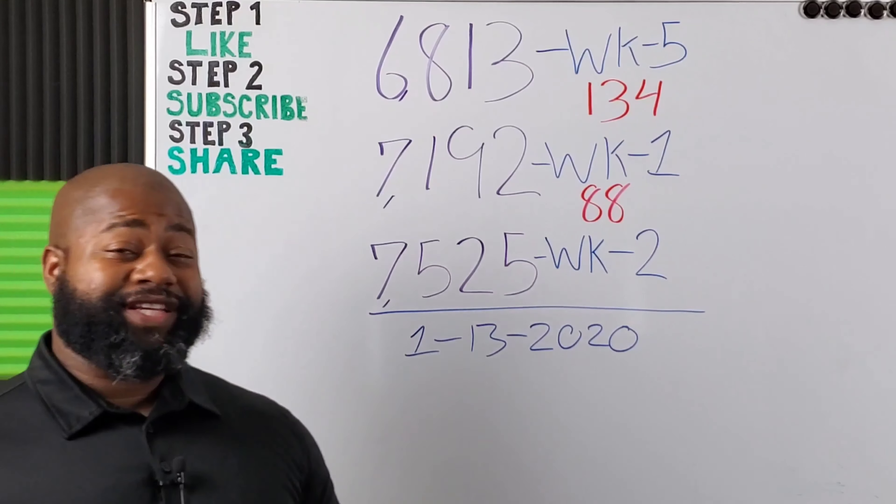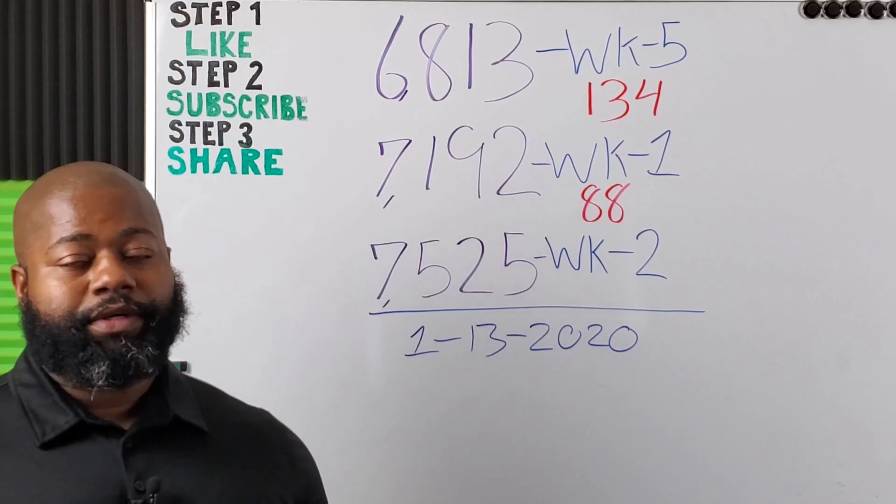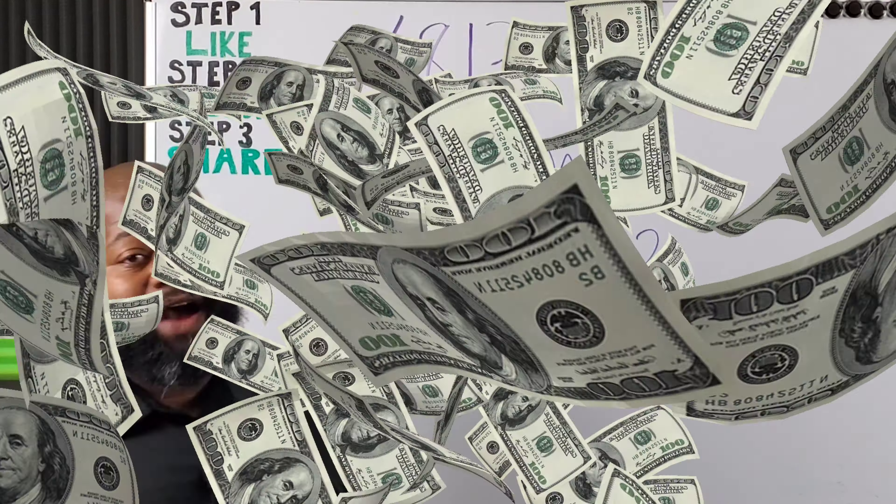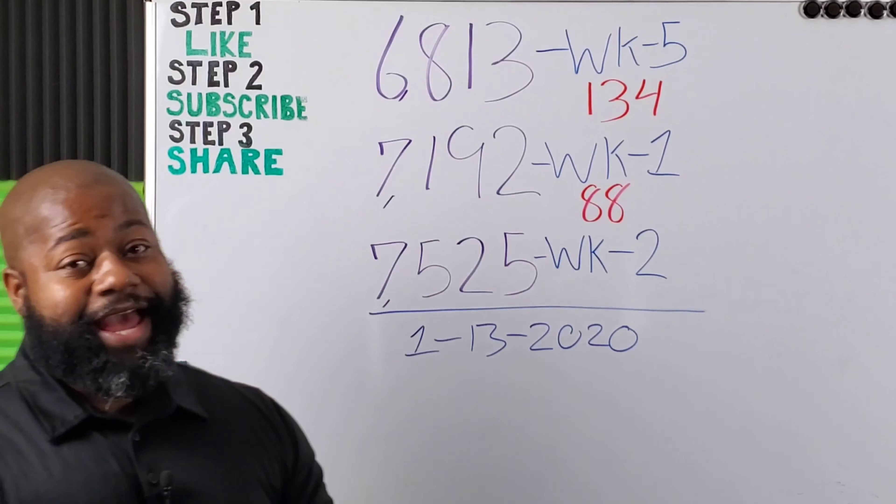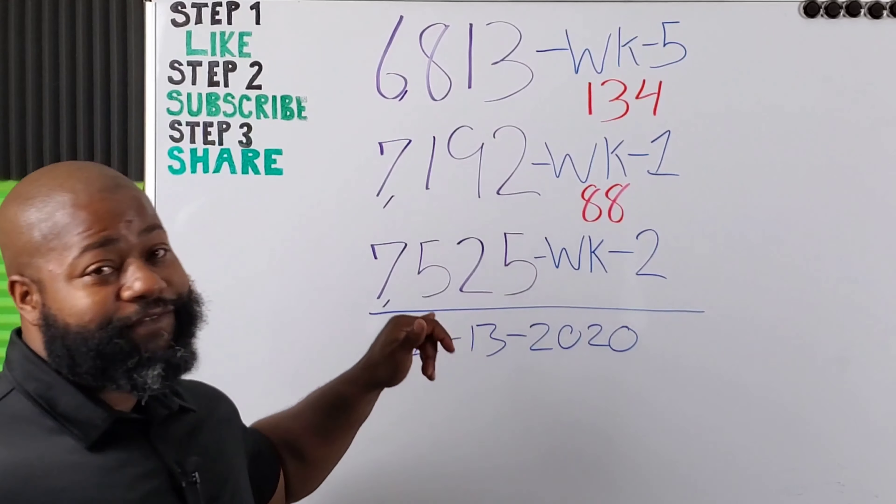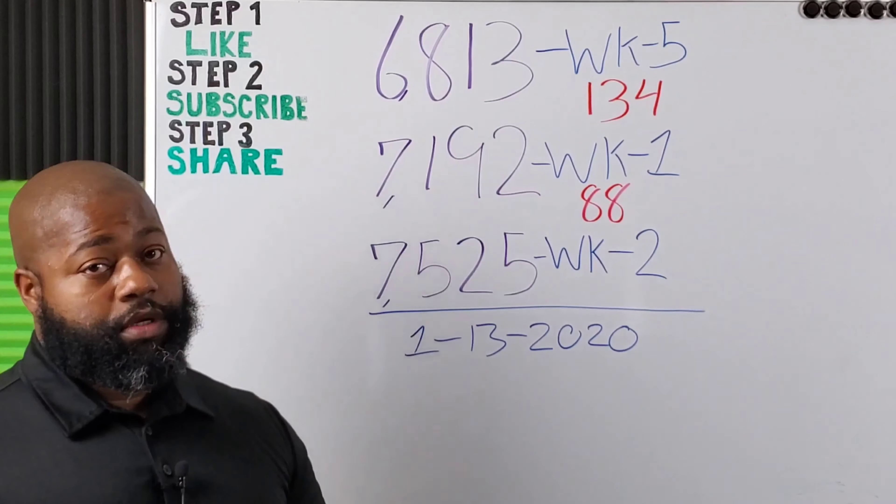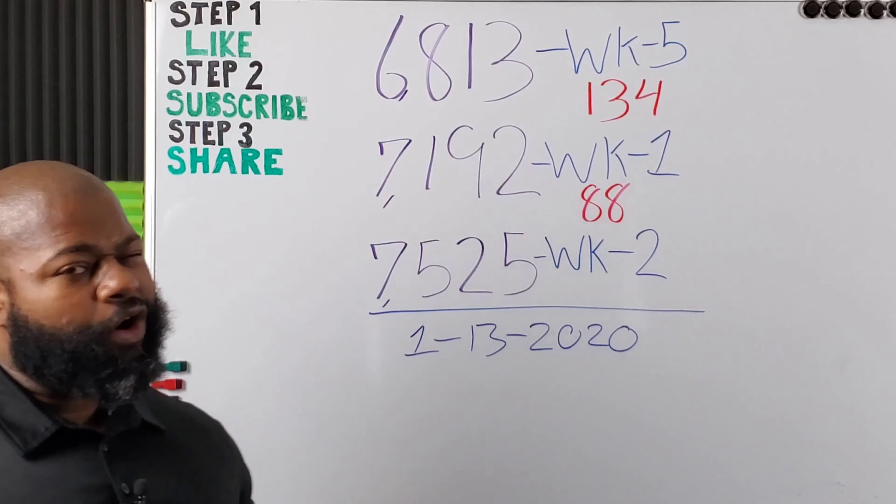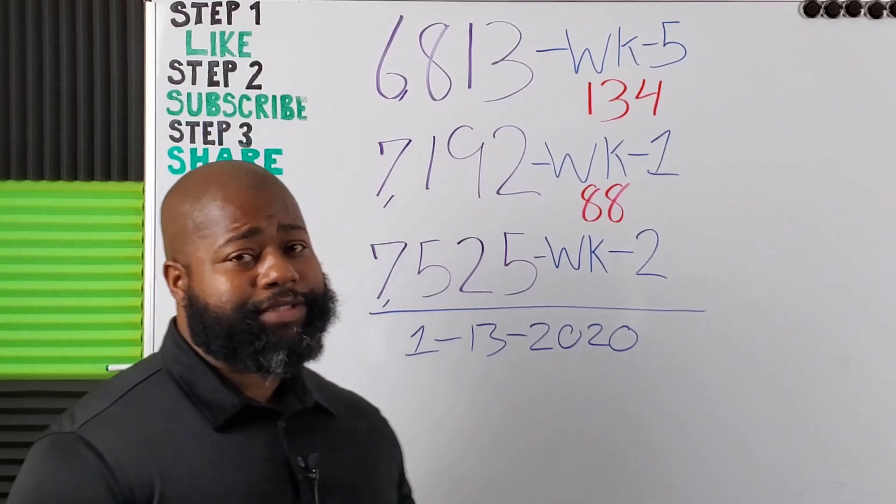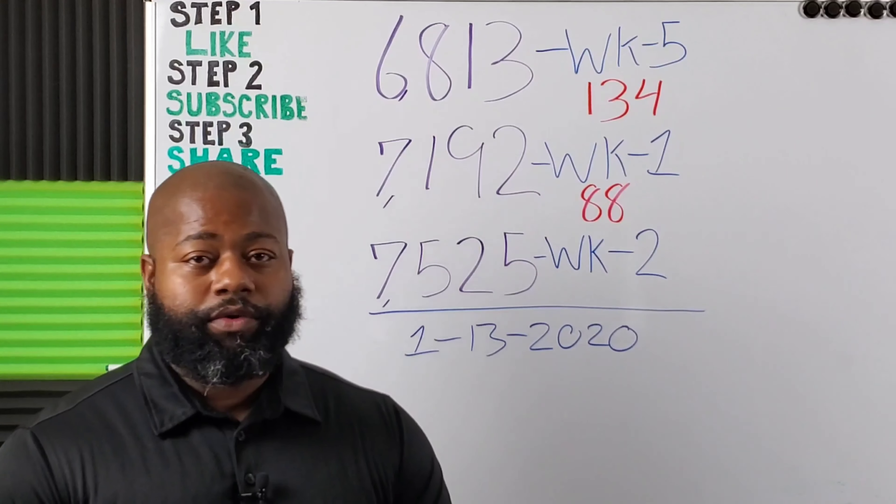My goal for this month in July was to have my account at $7,500. And as you can see, we surpassed that already by $25. And we only in week two. Still got two weeks to go in this month. So hopefully we can break the $8,000 mark. I think we may be able to do it if the market don't go down.